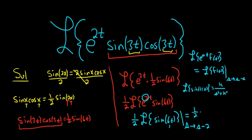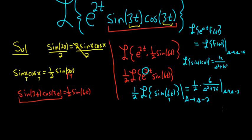So in this case, our k is 6. So it's 6 over s squared plus 6 squared is 36. And then we have our shift from s to s minus 2.